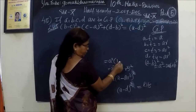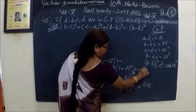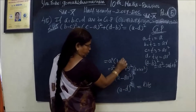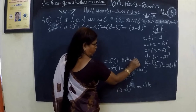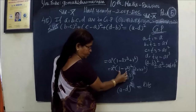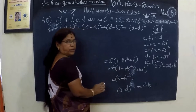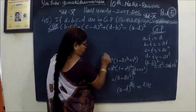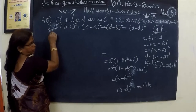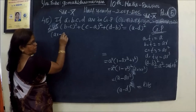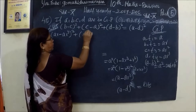A squared, then minus 2ab — 2 into a into b. This is how many times it is. So this is minus 2r cubed. This squared is r power 6. One is minus 2ab, then r power 6. This is how many times it is. b is equal to a·r. Then c is equal to a·r cubed.